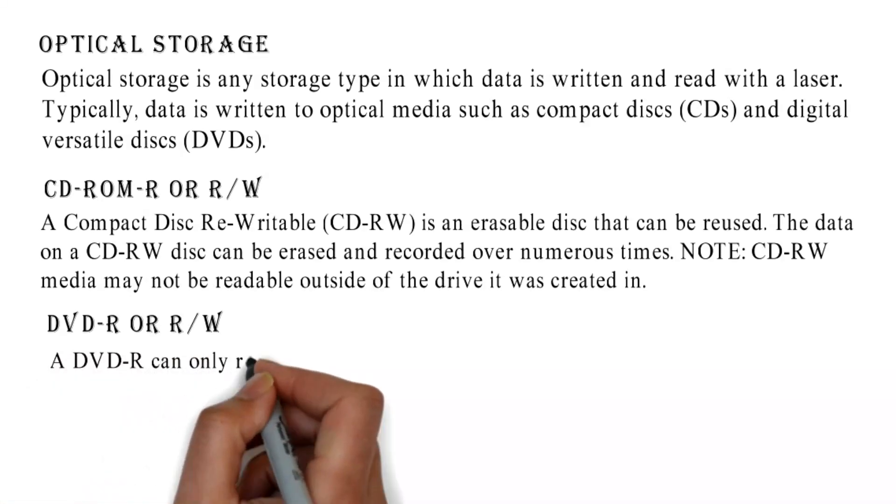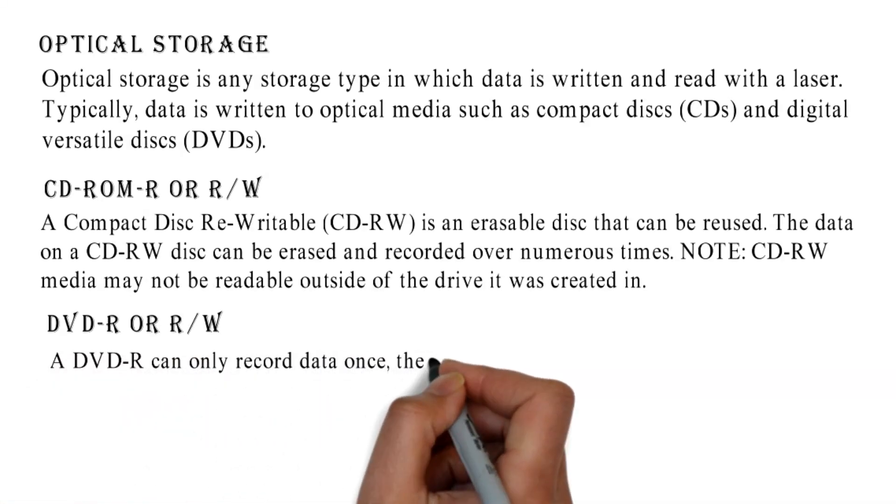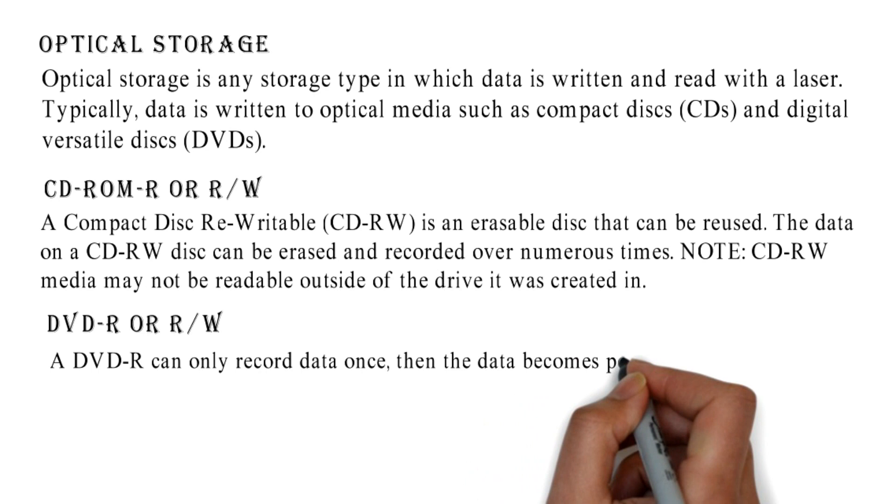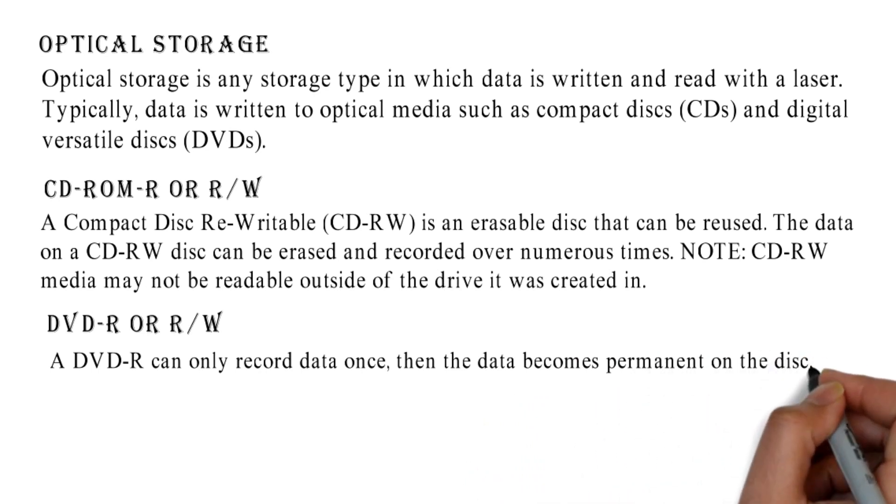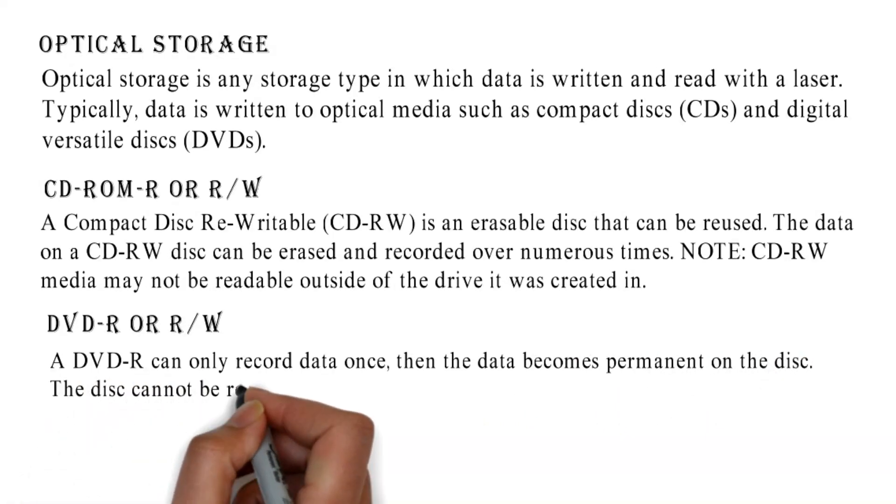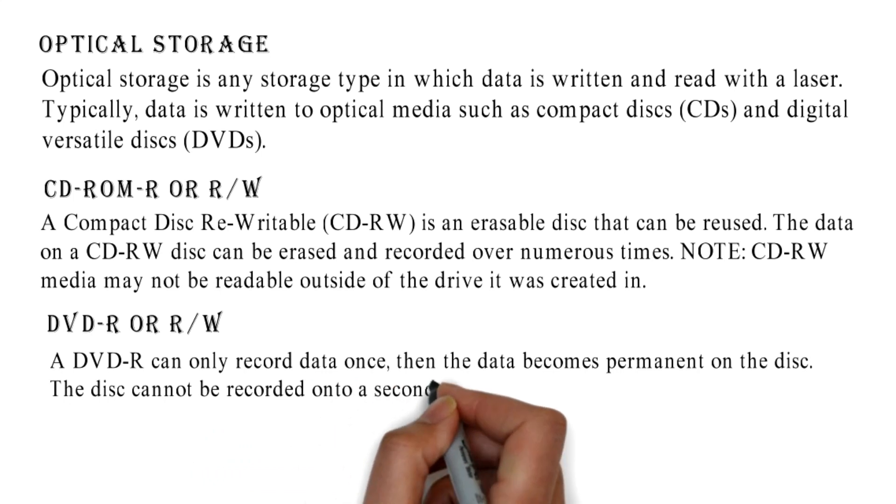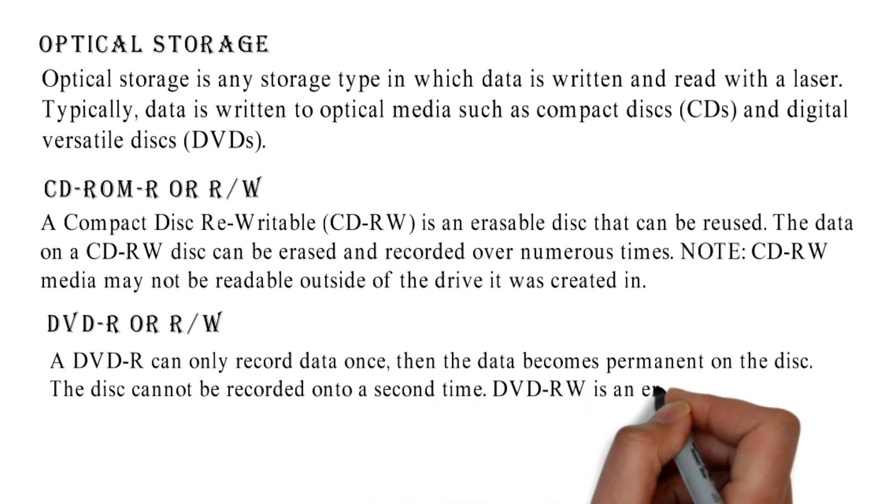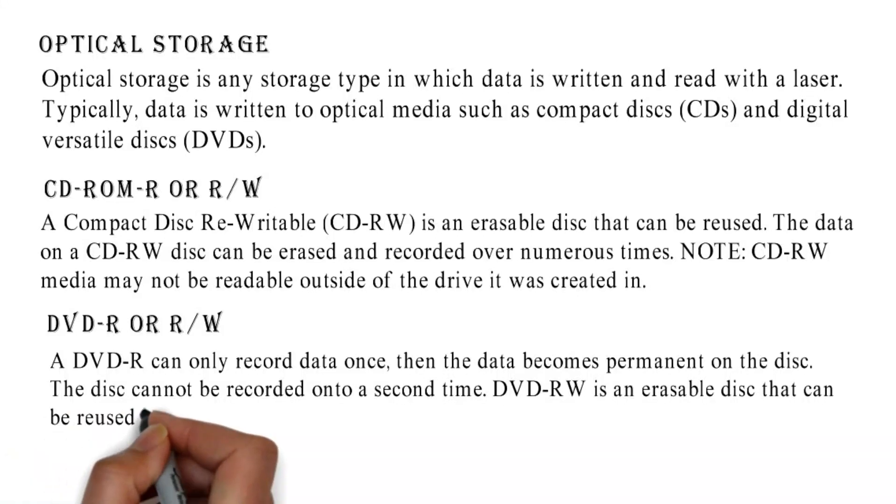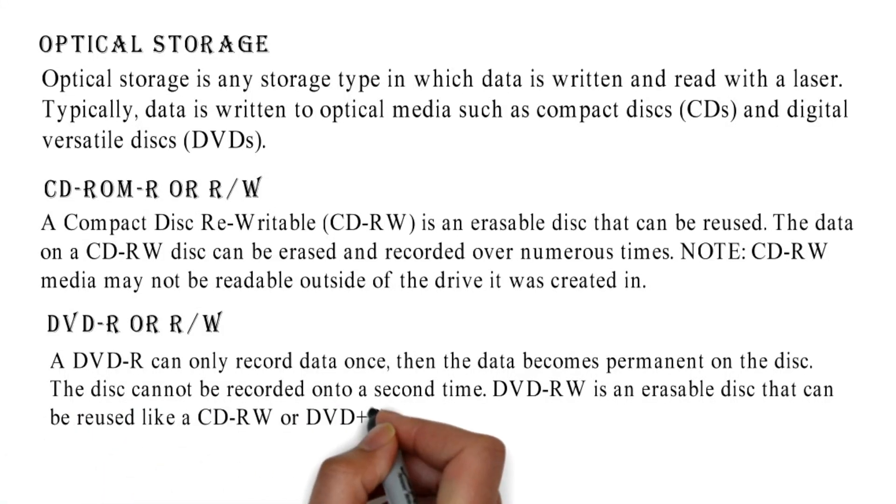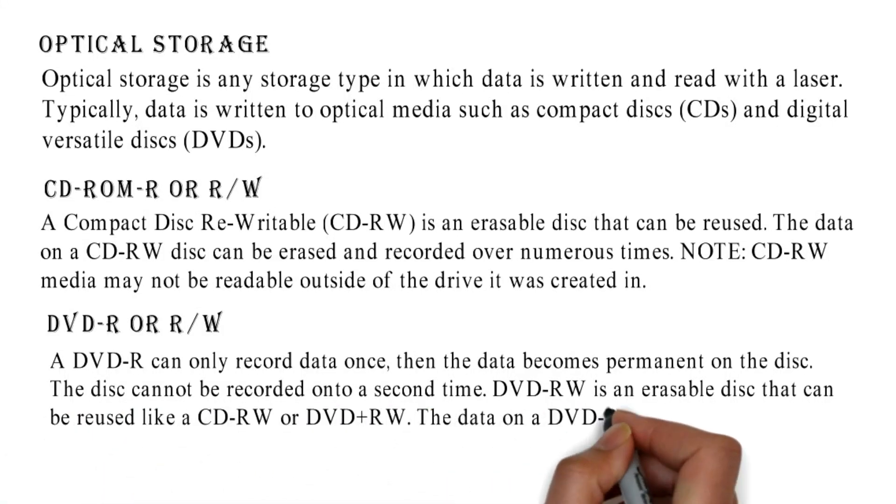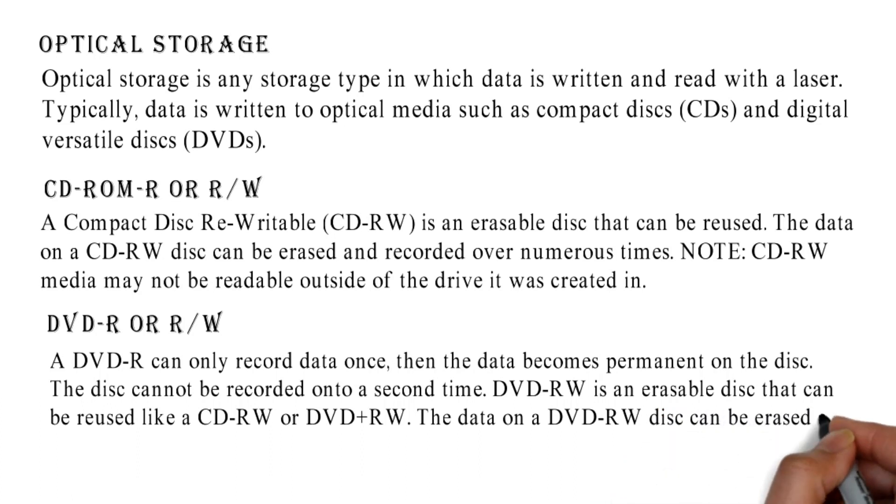DVD-R or R/W: A DVD-R can only record data once, then the data becomes permanent on the disk. The disk cannot be recorded onto a second time. DVD-RW is an erasable disk that can be reused like a CDRW or DVD plus RW. The data on a DVD-RW disk can be erased and recorded over numerous times.